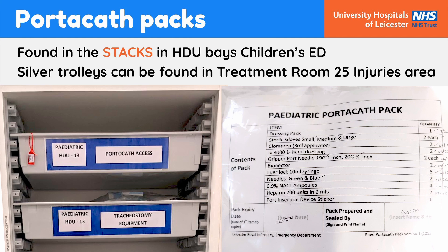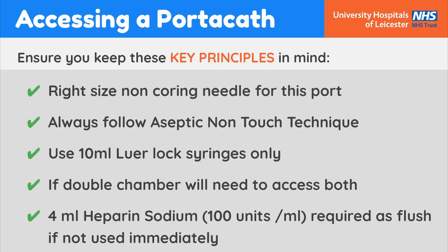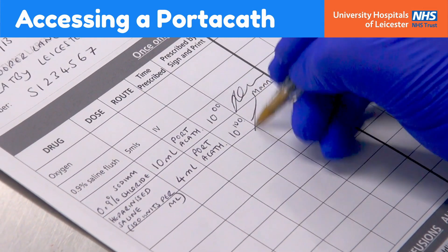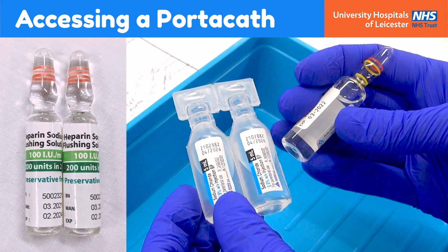Pediatric portacath access packs can be found in the stacks in the HDU bays of our department and contain all the equipment needed. Check that the appropriately sized portacath needle for this patient is available; additional sizes can be sourced from the support workers. Key principles are: use the right size non-coring needle for this port; always follow aseptic non-touch technique; use 10ml LuerLock syringes only; if the device has a double chamber, access both. Ensure 10ml of 0.9% sodium chloride and 4ml of heparin sodium 100 units/ml are prescribed, checked and taken to the bedside.